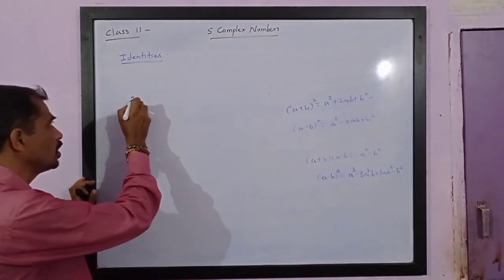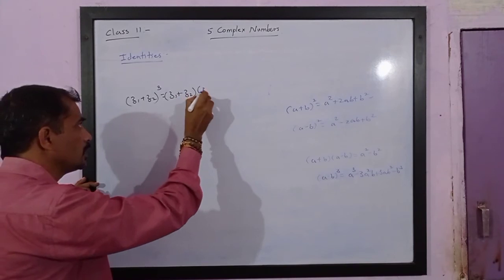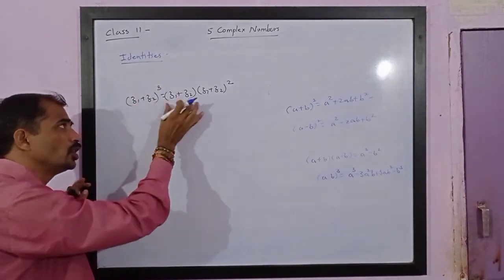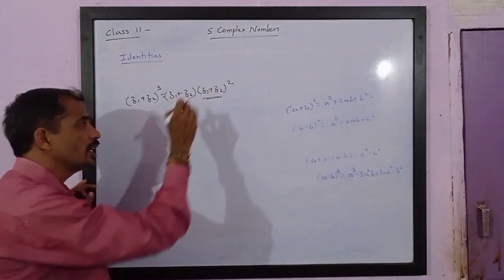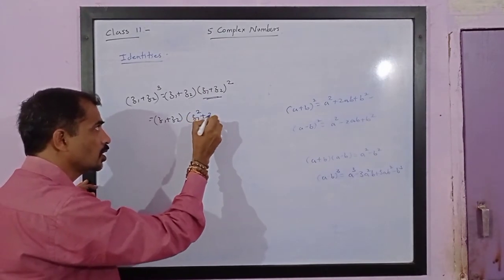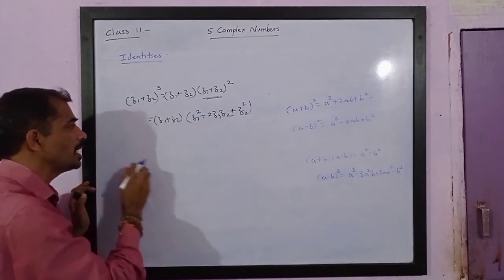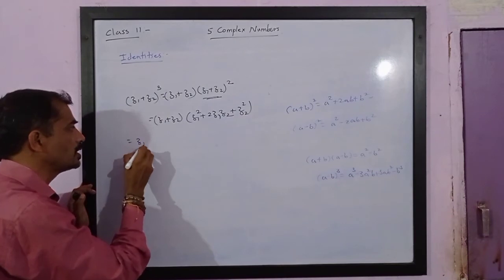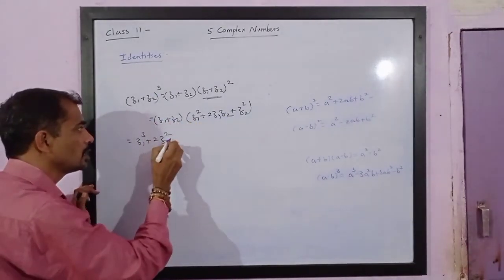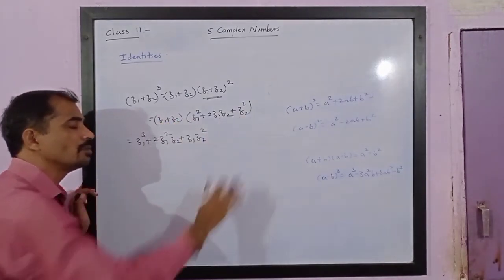Now let us see the next identity: (z1 + z2)³. This equals (z1 + z2) multiplied by (z1 + z2)², which we have already studied. So this is (z1 + z2)(z1² + 2z1z2 + z2²). Multiplying the first term z1 by the whole bracket gives z1³ + 2z1²z2 + z1z2².